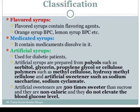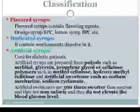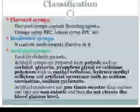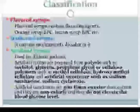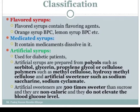To summarize artificial syrup: flavored syrup contains flavoring agents; medicated syrup contains dissolved medicament; artificial syrup is used for diabetic patients, prepared from polyols such as sorbitol, glycerin, propylene glycol, or cellulose polymers, and artificial sweeteners such as sodium saccharin or sodium cyclamate, which are 500 times sweeter than sucrose, non-caloric, and do not elevate blood glucose level.